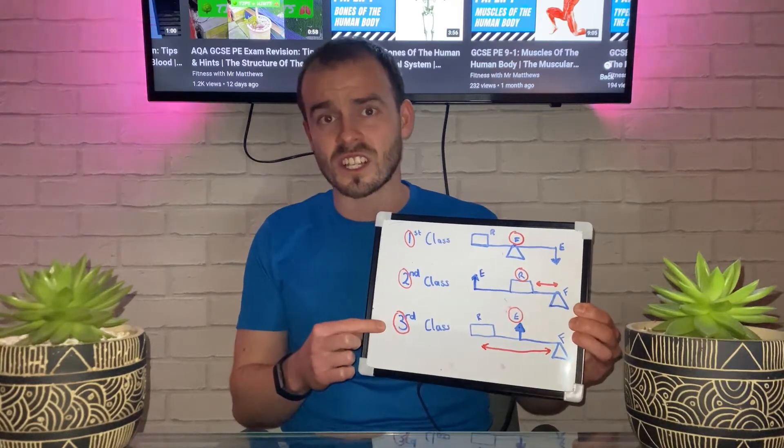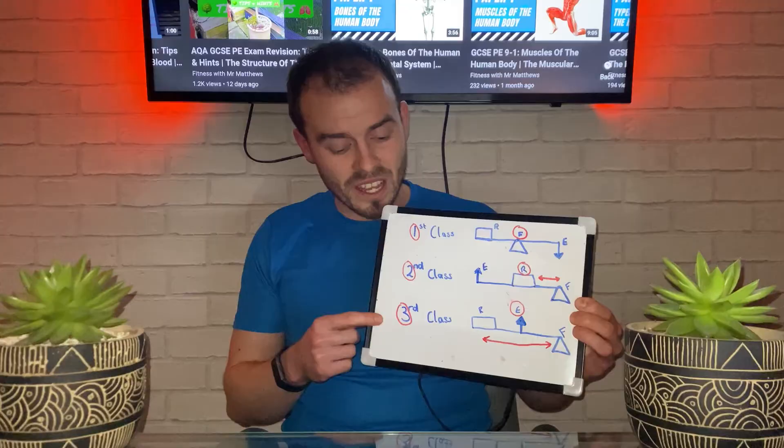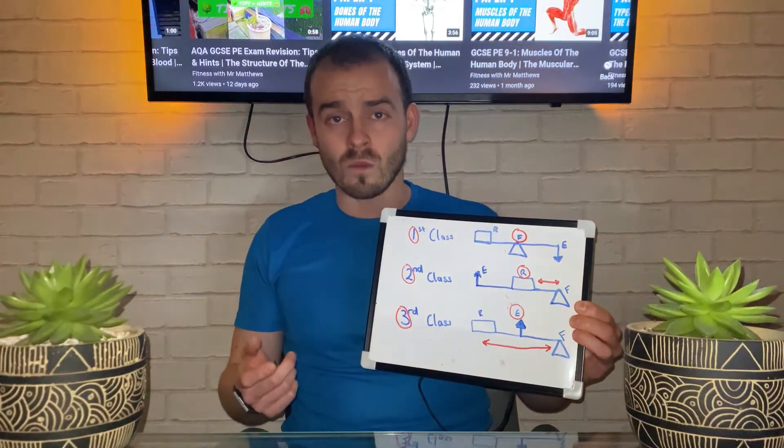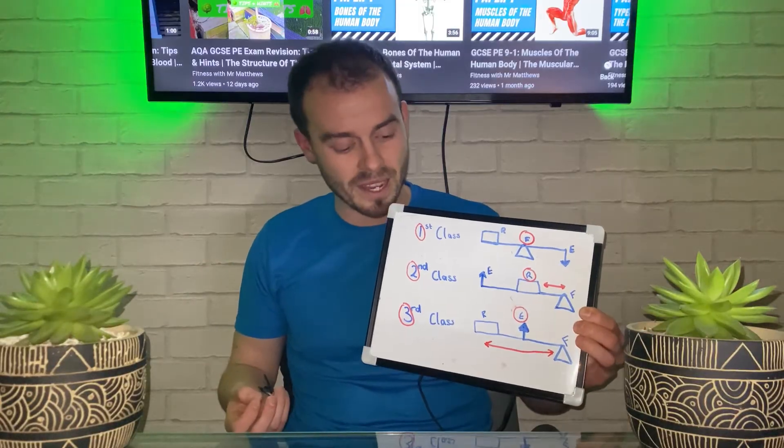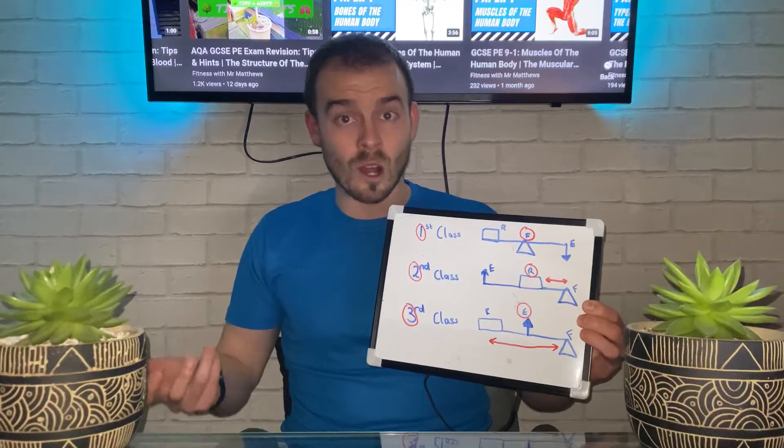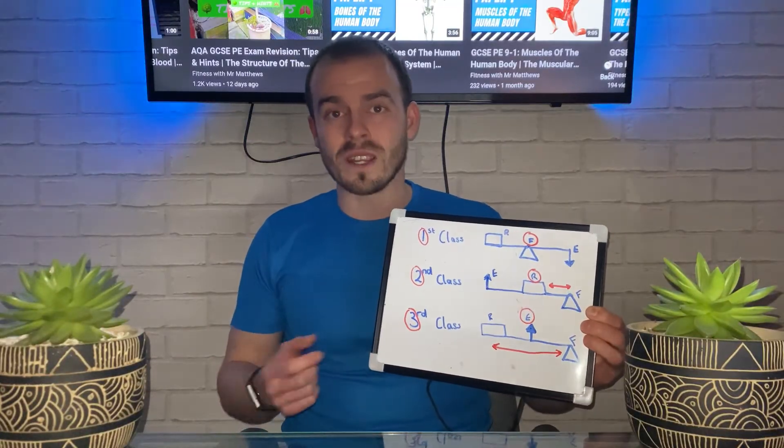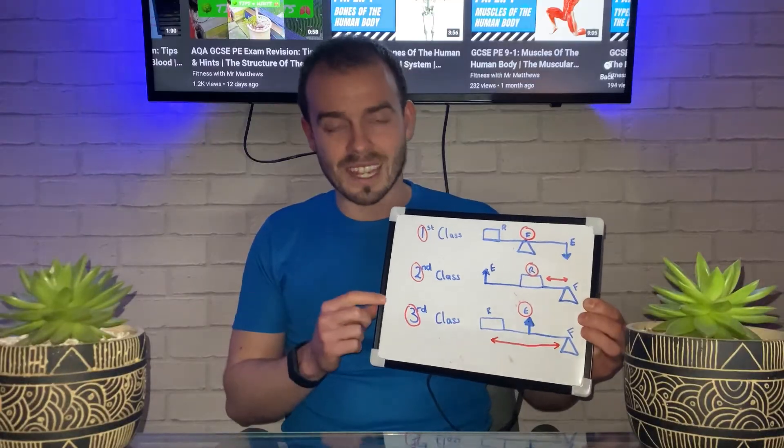For a third class lever system, we look at something like a bicep curl. In this scenario, the effort is the bicep because it's the muscle that contracts and shortens causing the movement. The fulcrum is the elbow joint, and the resistance is the dumbbell or weight that the person is lifting.